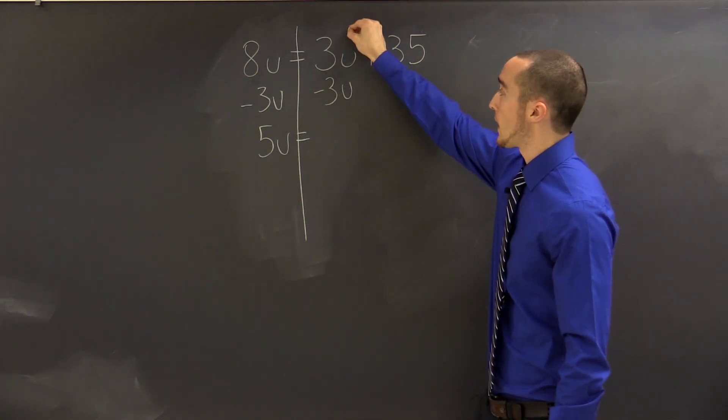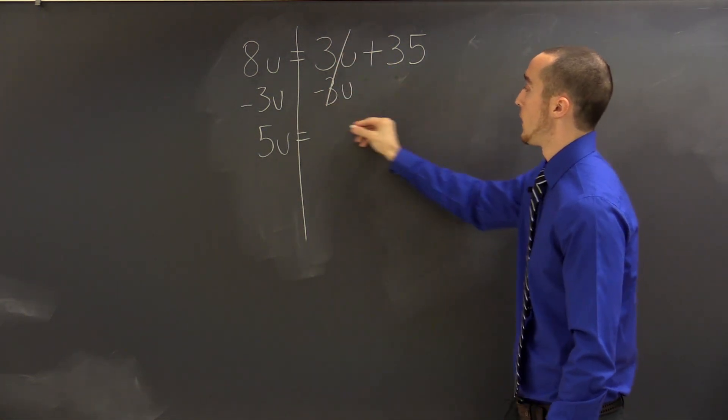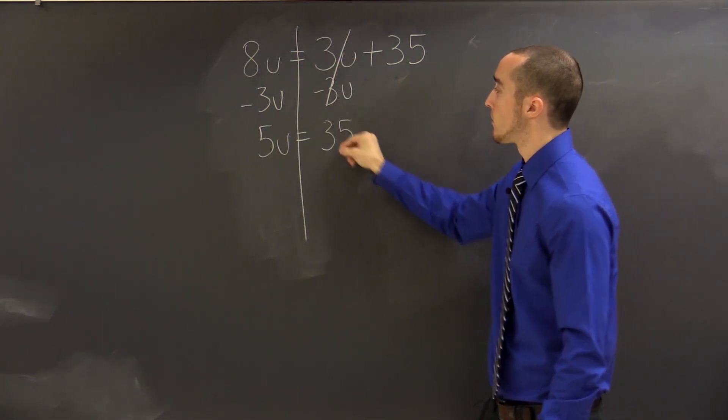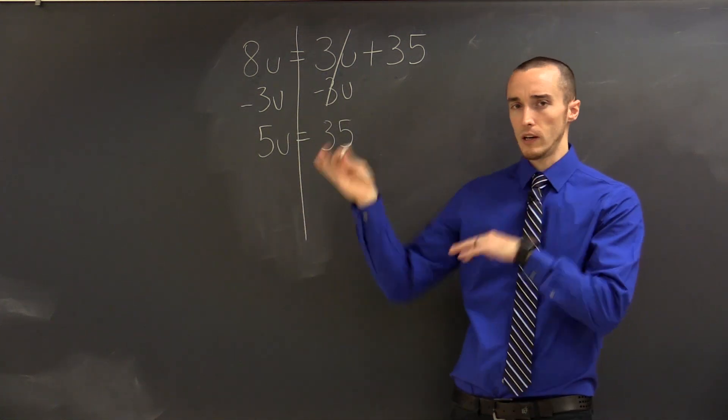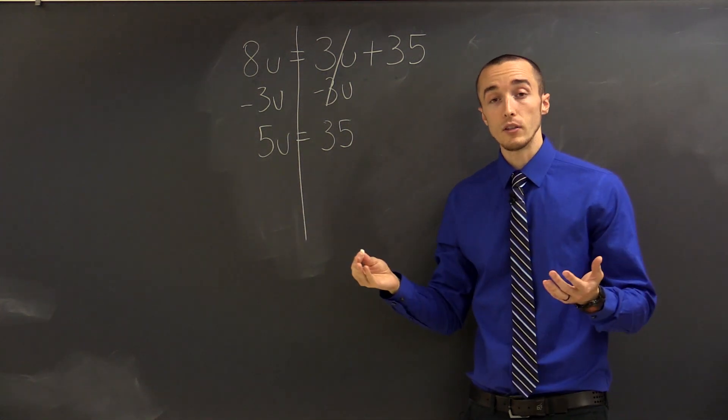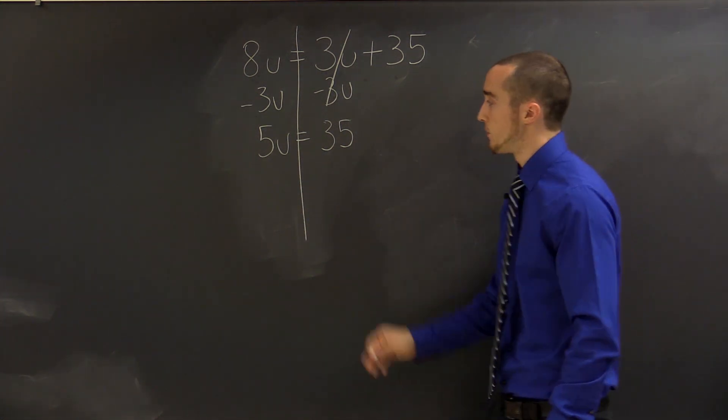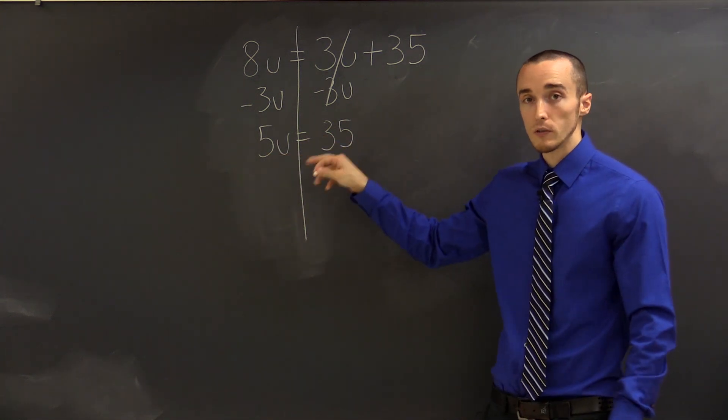Okay, so on the right-hand side, our 3us cancel, and I'll drop down to 35. Now we've solved the problem of having variables on both sides, and all we have to do is solve this like a regular equation. 5 times u equals 35, so using inverse operations, the opposite of multiplying by 5 is dividing by 5.